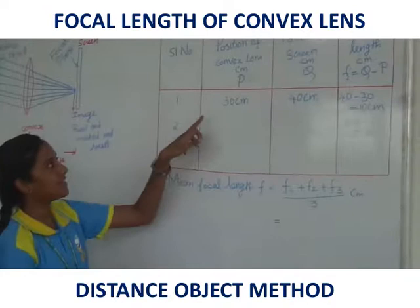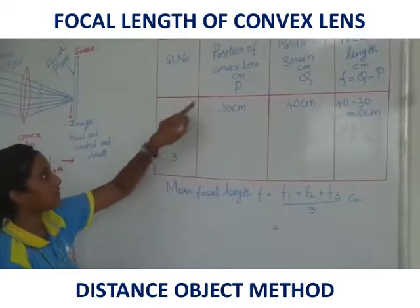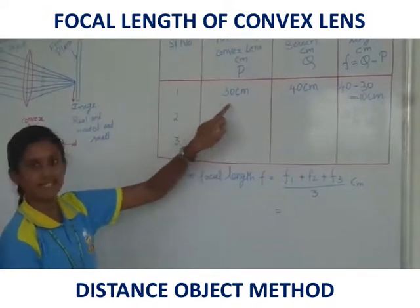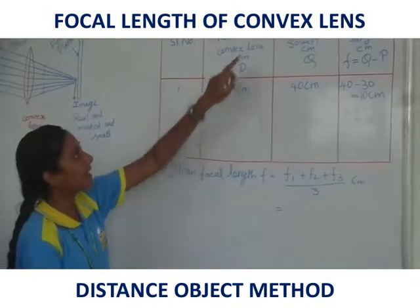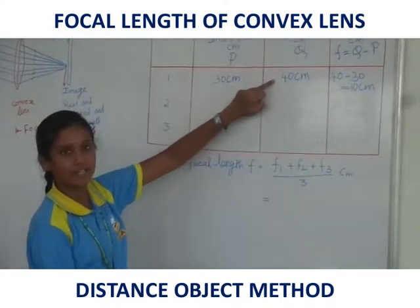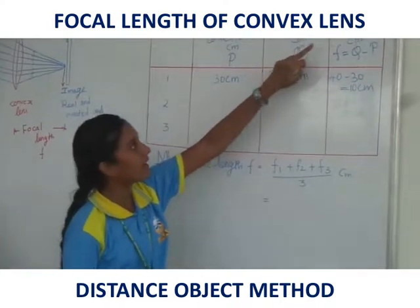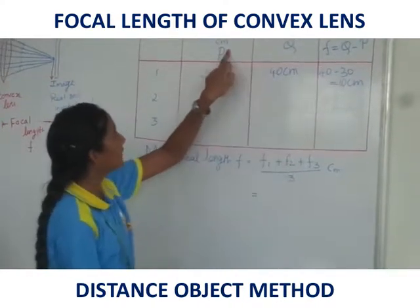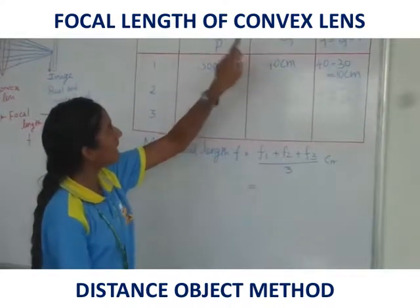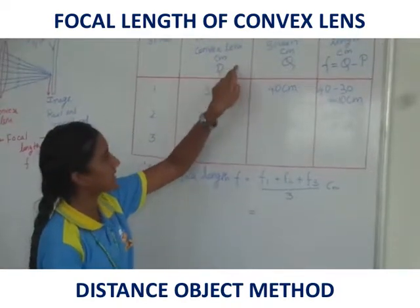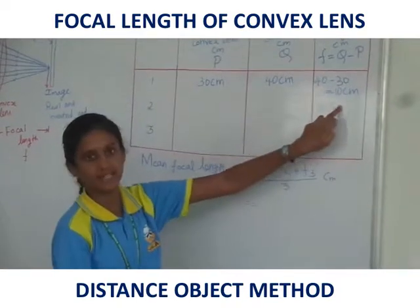In the first reading, the position of the convex lens is 30 cm and the position of the screen is 40 cm. The difference between the position of the screen and the position of the convex lens is 10 cm.